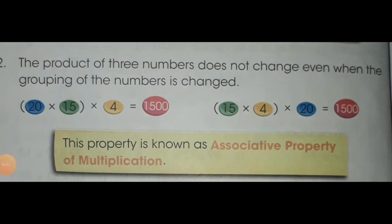Second property: the product of three numbers does not change even when the grouping of the numbers is changed. Here you can see the example given in your book. In this example, three numbers are multiplying — 20, 15, and 4 — with different groups.